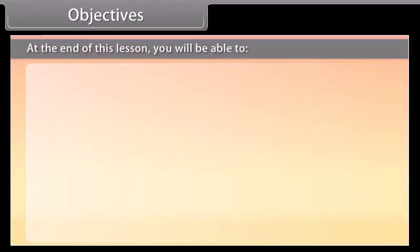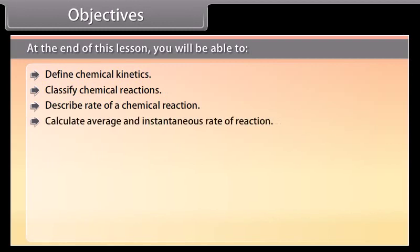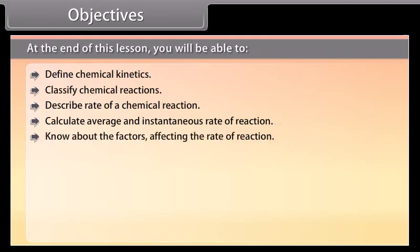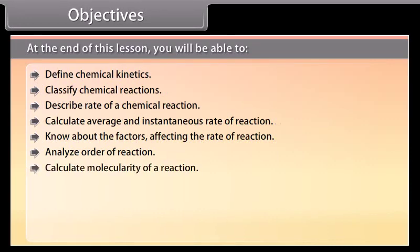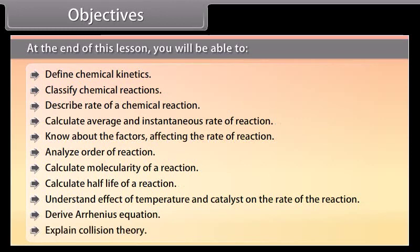At the end of this lesson, you will be able to: define chemical kinetics; classify chemical reactions; describe rate of a chemical reaction; calculate average and instantaneous rate of reaction; know about the factors affecting the rate of reaction; analyze order of reaction; calculate molecularity of a reaction; calculate half-life of a reaction; understand the effect of temperature and catalyst on the rate of reaction; derive the Arrhenius equation; and explain collision theory.